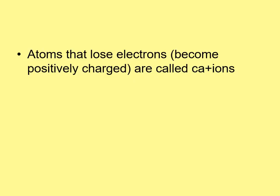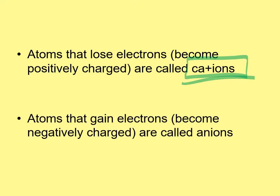Atoms that lose electrons become positively charged and are called cations — the 't' looks like a plus, so you'll never forget the name. Atoms that gain electrons become negatively charged and are called anions.